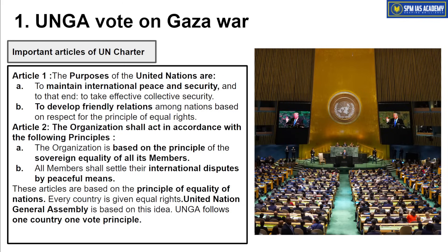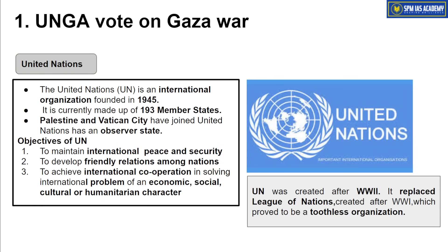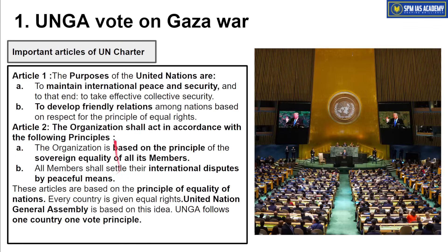Whenever any global conflict starts that can escalate to a global scale, that matter is discussed very vigorously on the United Nations platform. Just as the Russia-Ukraine war has been discussed on the UN platform on several occasions, the Gaza war will also be discussed in coming days. The problem is that a few countries hold a very dominant position at the UN platform and are misusing their power, especially within the UN Security Council among the P5 countries. Articles 1 and 2 of the UN Charter mainly lay down all these goals.